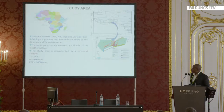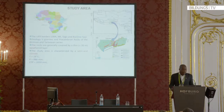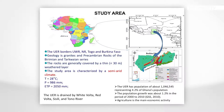By way of description of the study area, Ghana is in West Africa. I am working in the Upper East region, found at the extreme northeastern part of the country. The area is bounded in the north by Burkina Faso, on the right by the Republic of Togo, on the south by the Northern region of Ghana, and on the west by the Upper West region. It is a semi-arid area.